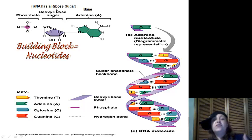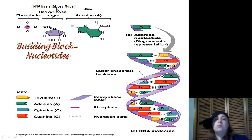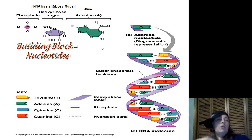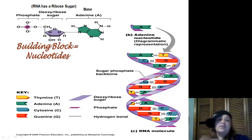The sugar differs between DNA and RNA. In DNA we have deoxyribose sugar, and in RNA we have ribose sugar. In DNA there are four bases: adenine, thymine, cytosine, and guanine. In RNA, uracil replaces thymine. These nucleotides form one side of a helix, and the other side forms the other strand, creating a double helix for our DNA.